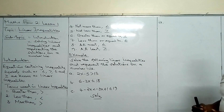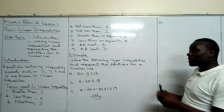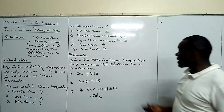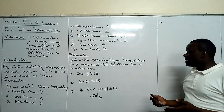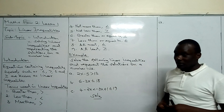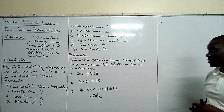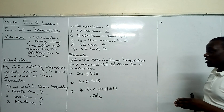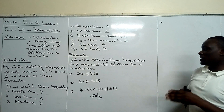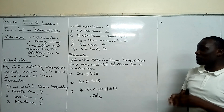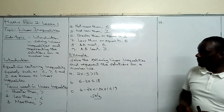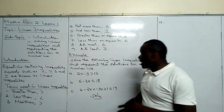Let's come up with a practical example whereby you have been sent to the market by your parents. Your parents tell you that when you go to the market, you are not supposed to spend an amount that is more than 50, but you can spend all of it. So that's why we include the term equal to.